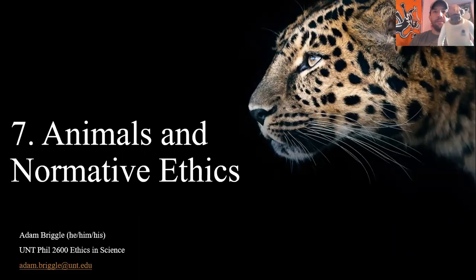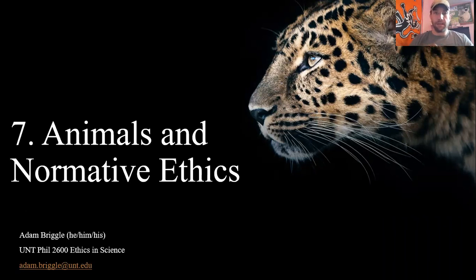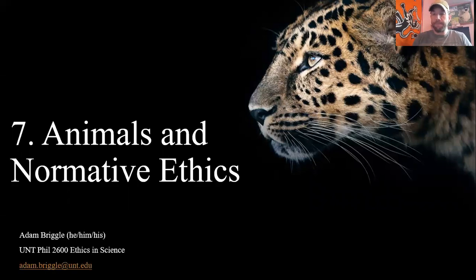Hey everyone, it is Adam and Akbar as usual coming at you for our seventh lecture in Philosophy 2600, Ethics and Science. This will be our last lecture in our module on ethics, and it's the third in our three-part series looking at the different kinds of ethics. We did cloning and descriptive ethics, relativism and metaethics. Now we're looking at animals and normative ethics with a particular focus on Peter Singer's article that you're reading.